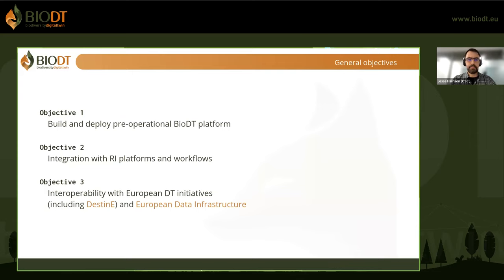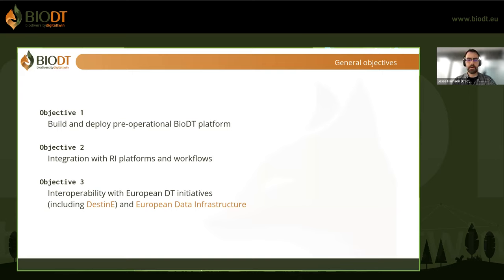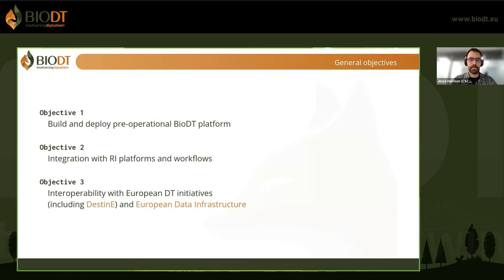In this project we have three main objectives. The first is to build a prototype for running the BioDT and deploy it. The second is to integrate the BioDT with different research infrastructure platforms and workflows. We have 22 different partners and four biodiversity research infrastructures involved. The third objective is to ensure that whatever we do remains compatible with wider European digital twin projects that are ongoing, including Destination Earth, and that we comply with European demands on making data available, usable, and accessible as part of the European data infrastructure.